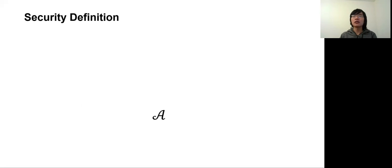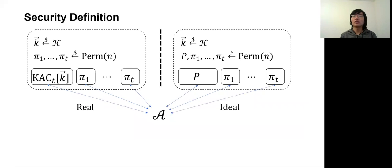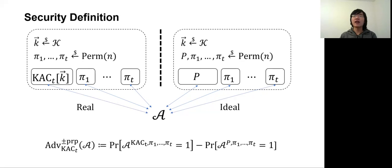To model the security of KAC, we consider an adversary that tries to distinguish two worlds. In the real world, the adversary has access to the public random permutations pi-1 to pi-t and the KAC construction built on those permutations. In the ideal world, the adversary can access the public permutations and additionally a random permutation p, which is independent from all the permutations. In both worlds, the adversary can query any permutations in both forward and backward directions. The security of KAC is defined as the advantage of the adversary in distinguishing these two worlds.